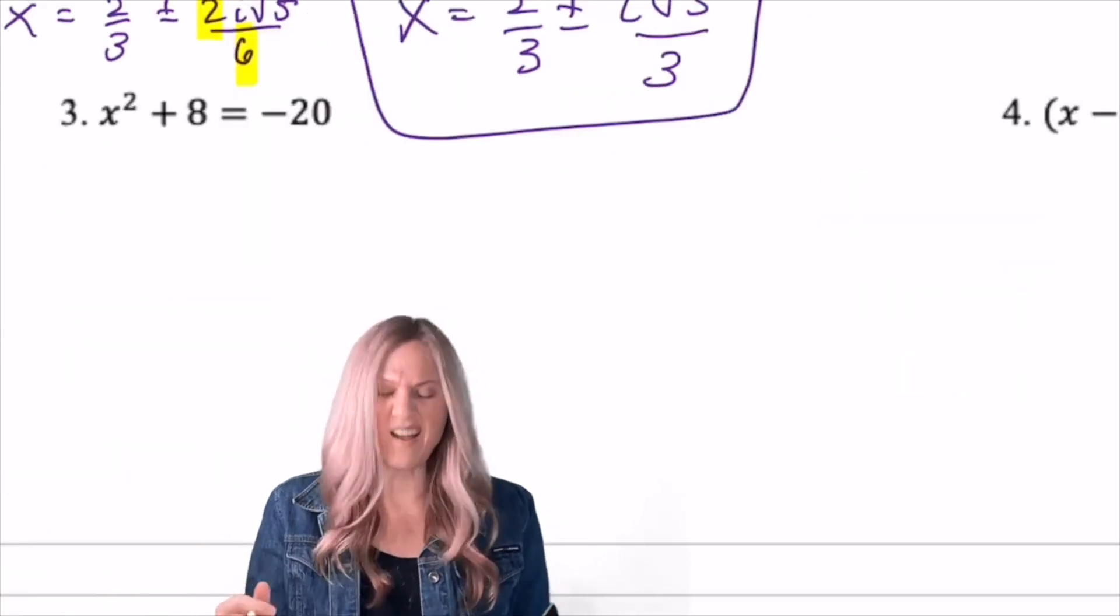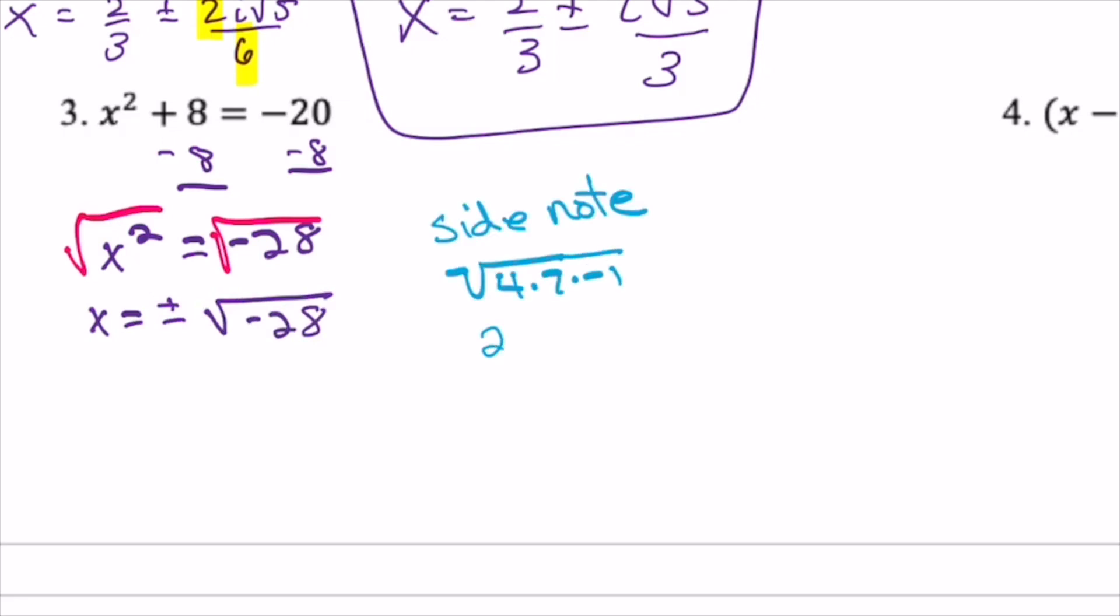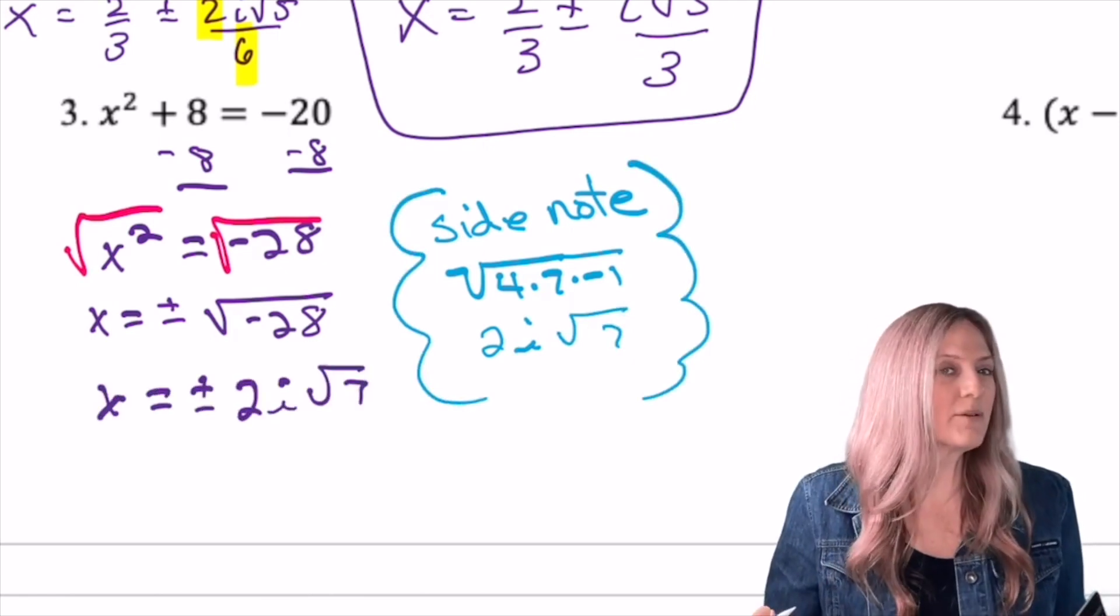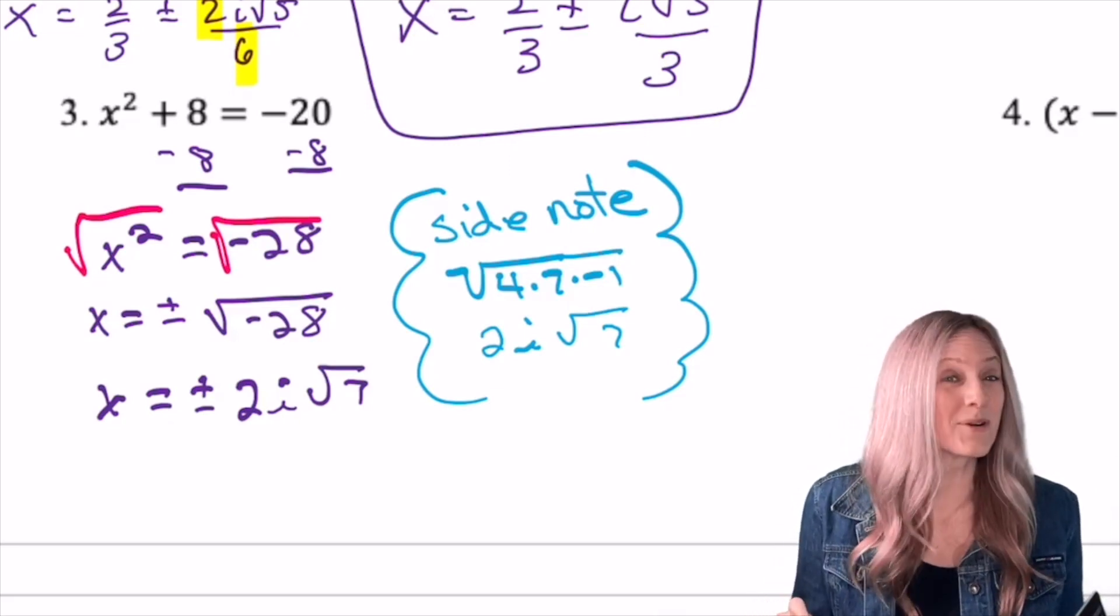Take a look at number 3. I think you got this one. x equals positive 2i√7 and negative 2i√7. Did you write it in the correct order?